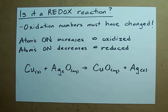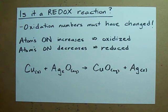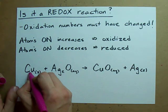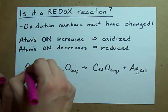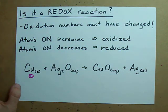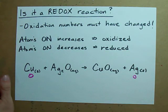Let's check it out. Assign oxidation numbers to these and tell me if there's been a redox reaction. Do you remember the rules for assigning oxidation numbers? Elements are always zero. This is just metallic copper, just the element — oxidation number is zero. Same with silver, just an element, zero.